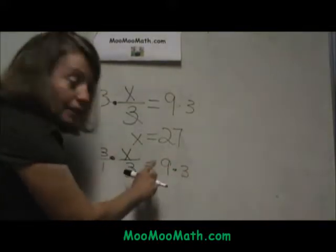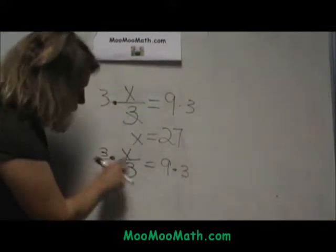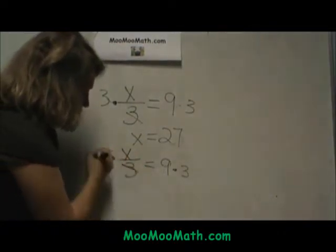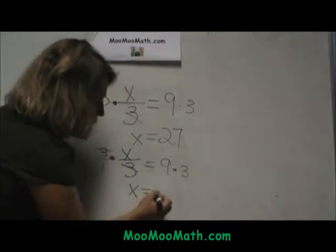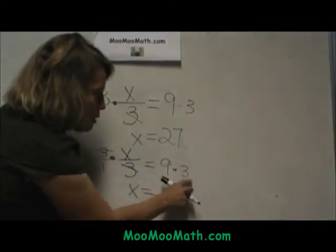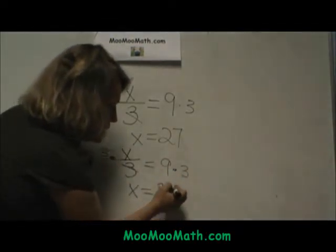On this left side, the 3's will cancel out, and I'm left with 1x or just x. And on the right side, 9 times 3 is 27.